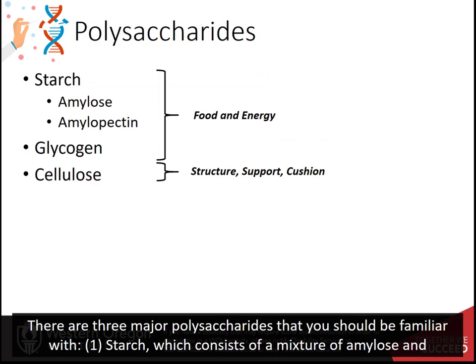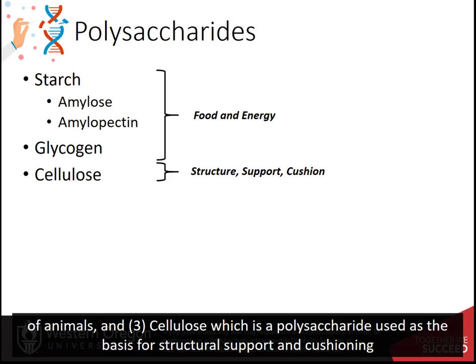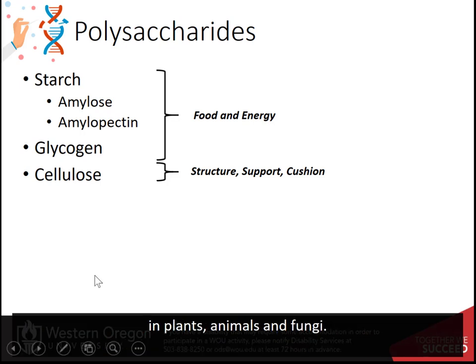There are three major polysaccharides to be familiar with. First, starch, which consists of a mixture of amylose and amylopectin and is the common carbohydrate storage form found in plants. Second, glycogen, which is the common carbohydrate storage form of animals. And third, cellulose, which is used as a basis of structural support and cushioning in plants, animals, and fungi.